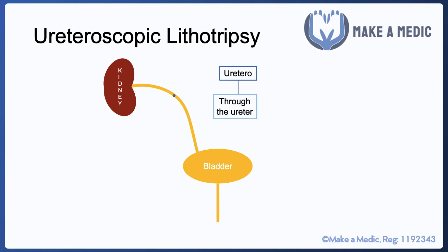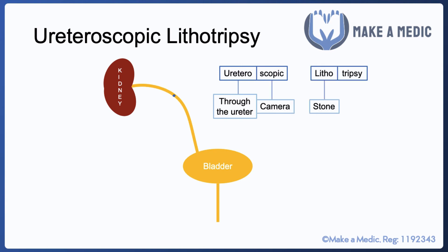Uretero suggests it's through the ureter; scopic suggests there's a camera involved; litho means stone; and tripsy means crushing the stone into smaller pieces that can then pass through the urinary tract. This involves passing a fine camera via the urethra and bladder into the ureter, and breaking down the stone — usually using laser technology.